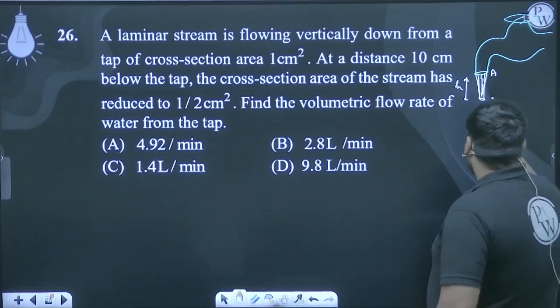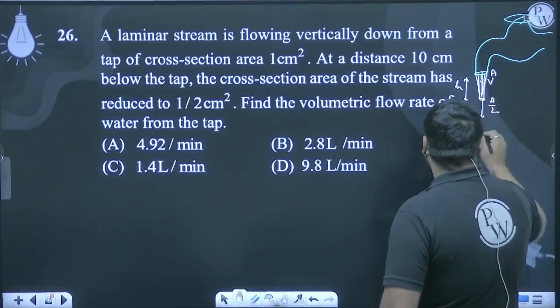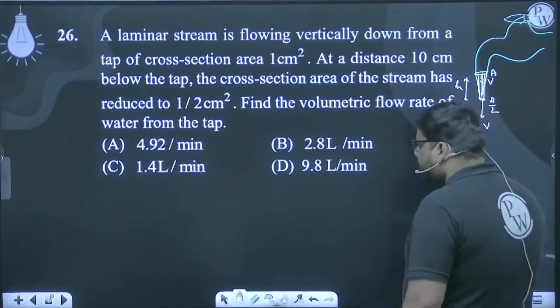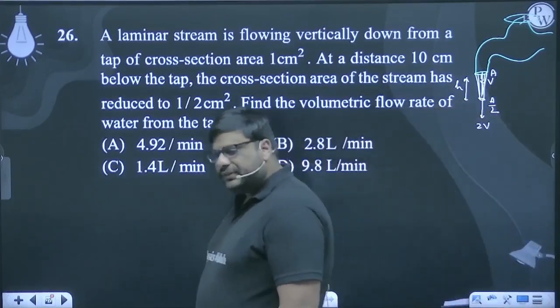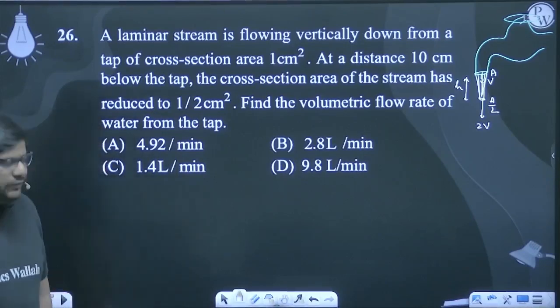So when area becomes half, if the speed here is v, then the speed here will be 2v. How did I say this? Simple equation of continuity: A₁v₁ = A₂v₂.